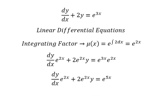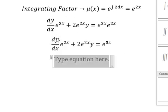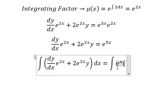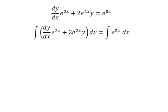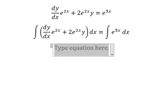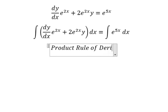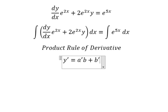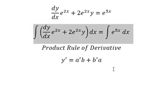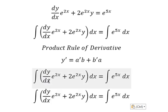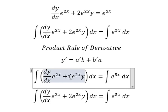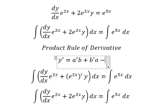Next we need to integrate both sides. We can use the product rule of the derivative: the first derivative of y equals the first derivative of a multiplied by b, plus the first derivative of b multiplied by a. So we have the first derivative of a multiplied by b, and the first derivative of b multiplied by a.